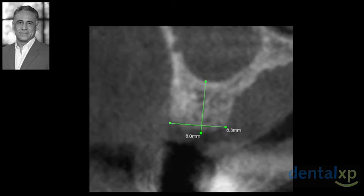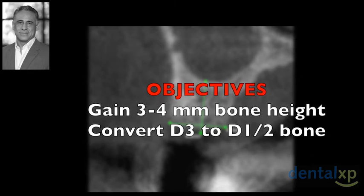We also like to place the implant in single stage fashion with the healing abutment, providing that we have achieved great implant stability. So our surgical objectives are to gain 3-4mm of additional bone height and convert our bone quality, which is most likely a D3 or D4 bone, to a more dense D1 or D2 level.